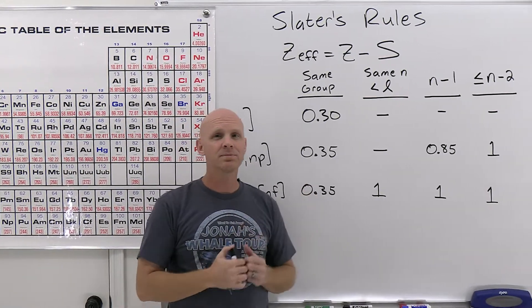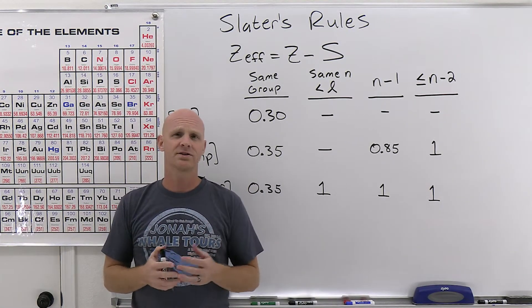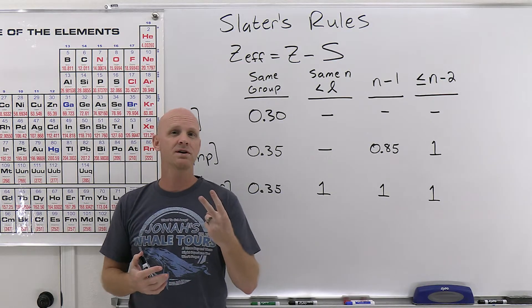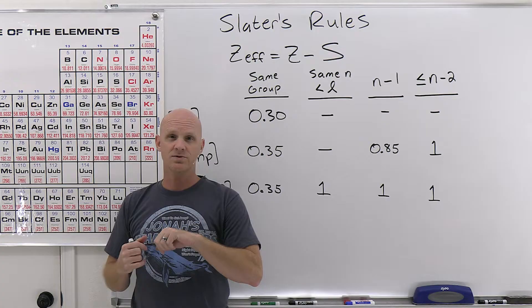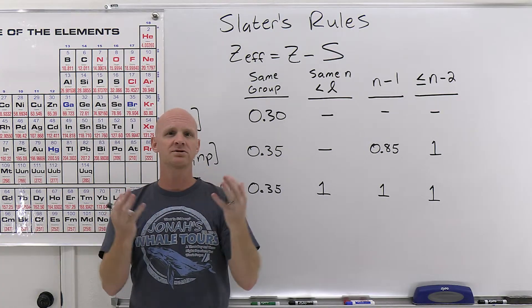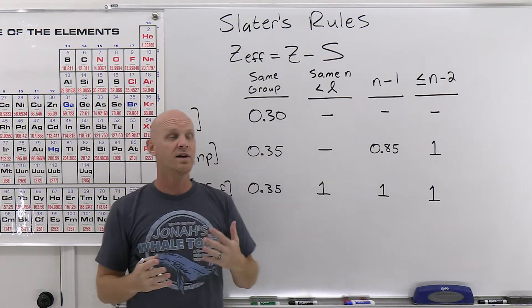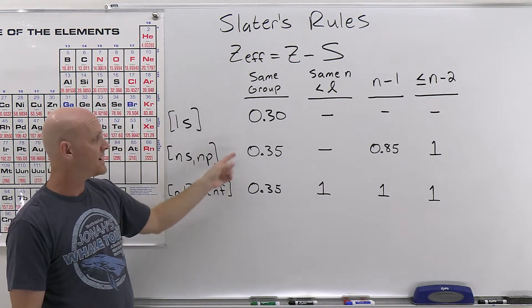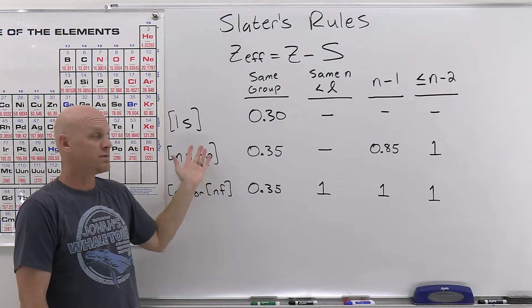We're going to get a little bit better approximation here, and so a couple of things we've got to factor in. So what Slater accounted for was two things. One. In the last lesson, we said that all the electrons in the same shell as the outermost shell don't really screen each other. Well, that's not true.